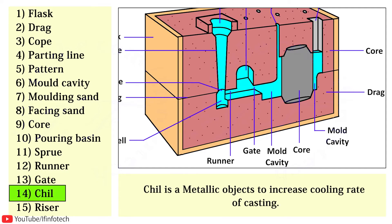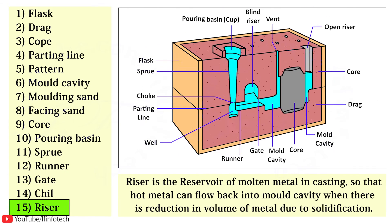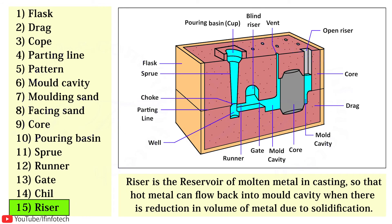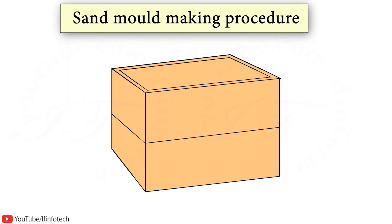The chill is a metallic object used to increase the cooling rate of casting. The riser is a reservoir of molten metal so that hot metal can flow back into the mould cavity when there is a reduction in volume of metal due to solidification. In the sand mould making procedure,